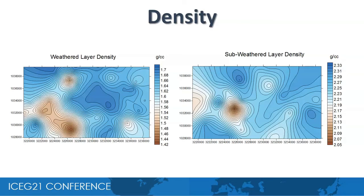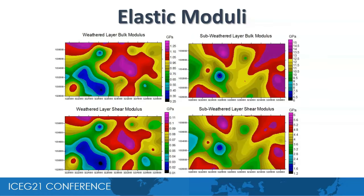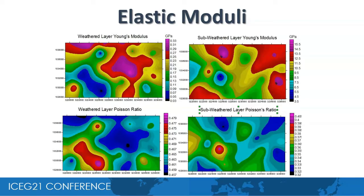The velocity information is used to compute the density and porosity distribution in the study area. Using compressional and shear wave velocity along with density, we can compute the spatial distribution of various elastic moduli such as bulk modulus and shear modulus. Similarly, we can compute Young's modulus and Poisson's ratio for the weathered and sub-weathered layers. These parameters are indicators of ground strength.